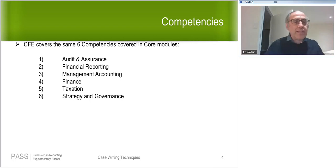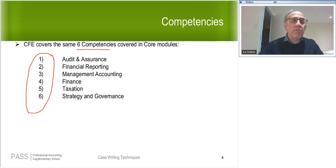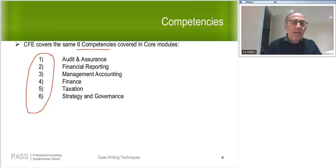The CFE covers the same six competencies you were responsible for in the core modules: audit and assurance, financial reporting, management accounting, finance, taxation, and strategy and governance. For those who did the core modules, the technical knowledge required will be similar. At what level you need to know these subjects, I'll address in just a moment when we look at the competency map.